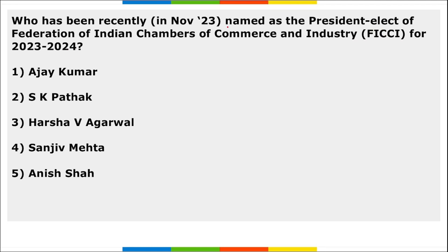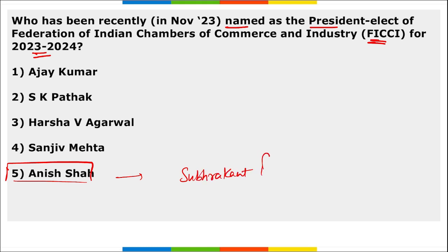Next: who has been named as the President-elect of FICCI for 2023-24? Anish Shah has been named as the President-elect of FICCI for 2023-24. He will be succeeding Subrakant Panda as the new President of FICCI. He is currently serving as the Vice President of FICCI.